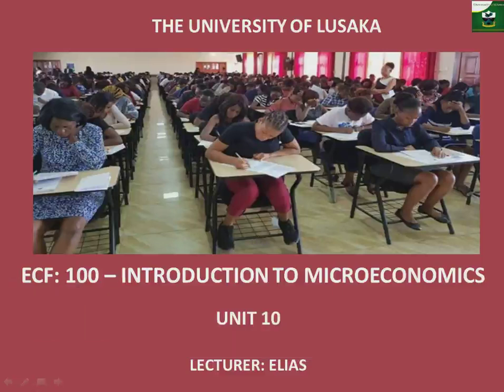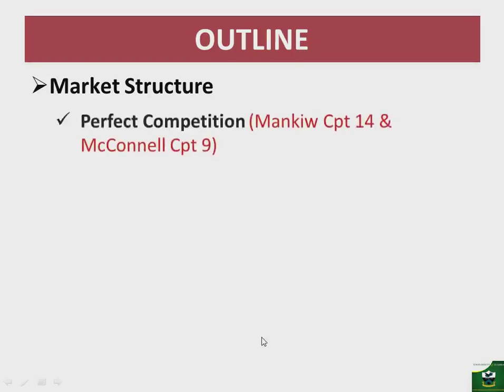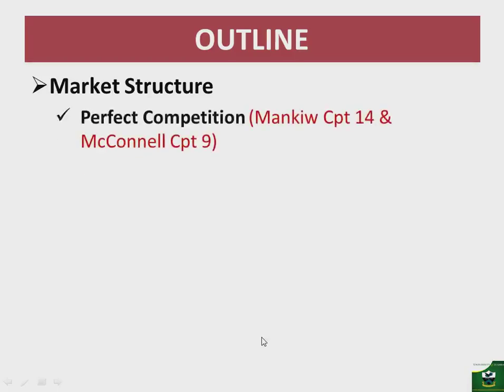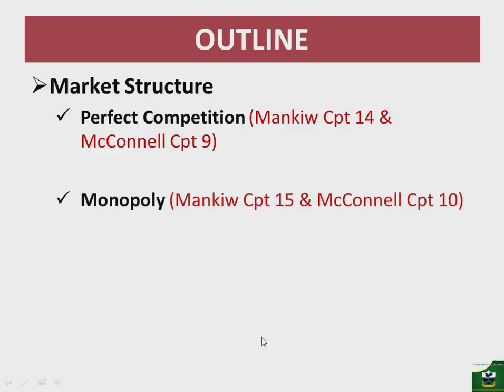Hello, we are now in unit 10, which is the concluding unit of the introduction to microeconomics. I am your host Elias. In this video we are going to look at the market structure. Specifically in this unit we are going to look at the market structure, and then we will have the perfect competition structure in this first session. The first thing we look at is perfect competition, which you can find in Mankiw chapter 14 and McConnell chapter 9.